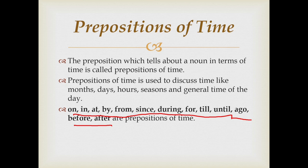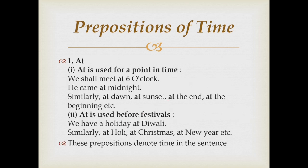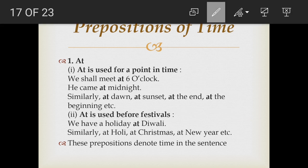Let's see the first preposition of time: 'at.' At is used for a point in time — a particular time. For example, 'We shall meet at six o'clock.' Six o'clock is a point in time, so we use 'at.' Similarly, 'He came at midnight.' We can also use 'at' with: at dawn, at sunset, at the end, at the beginning, etc.